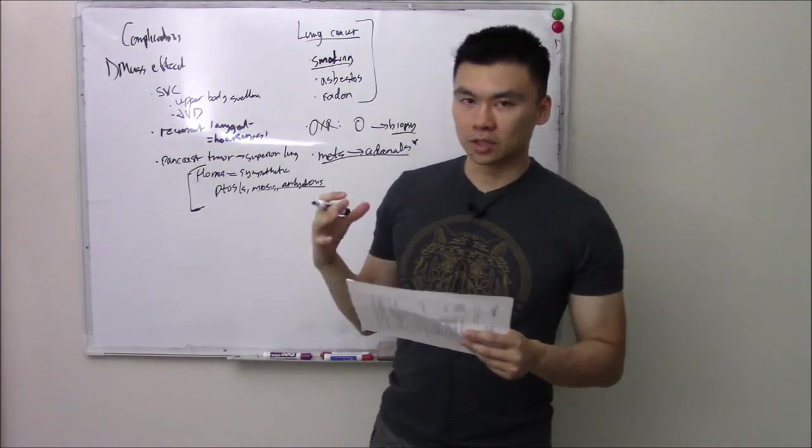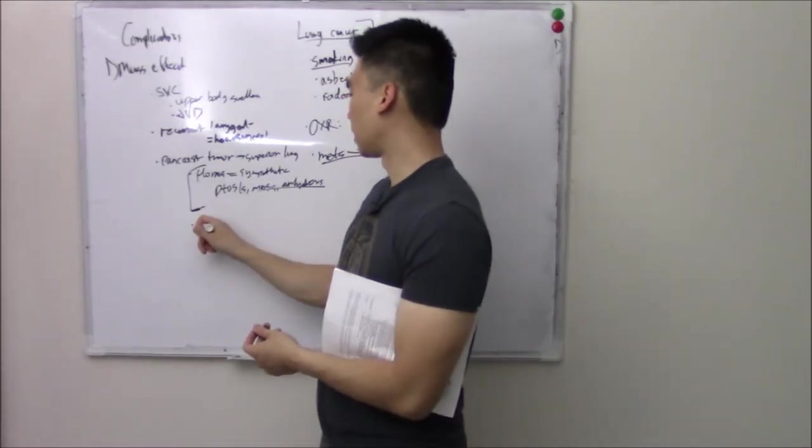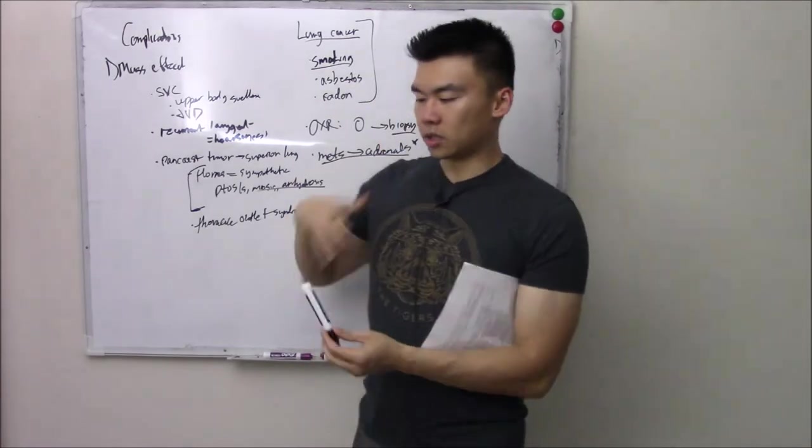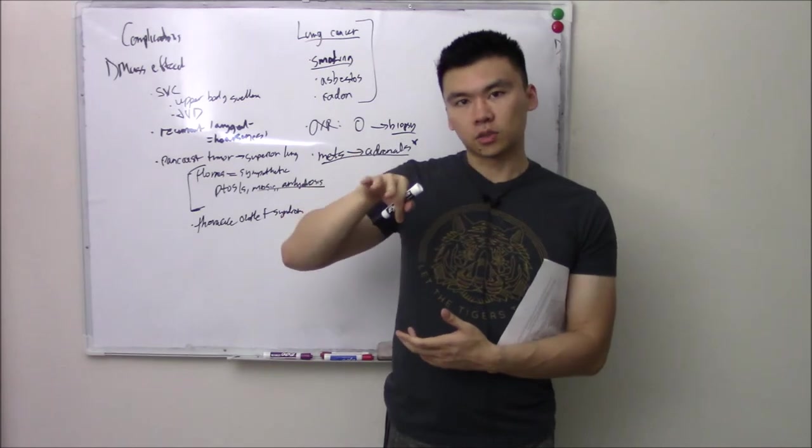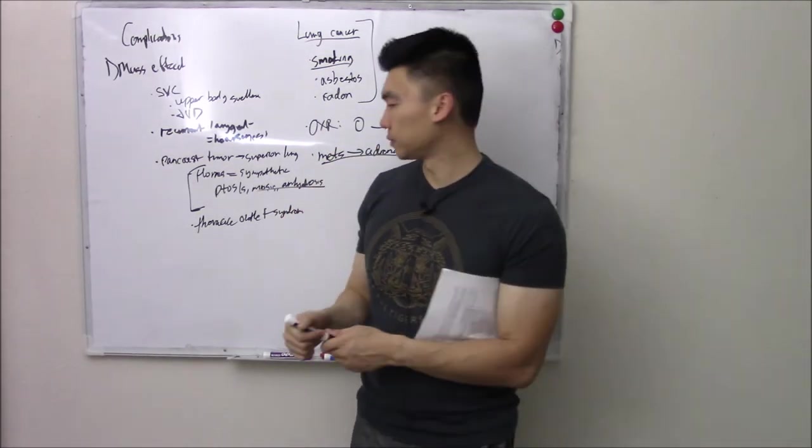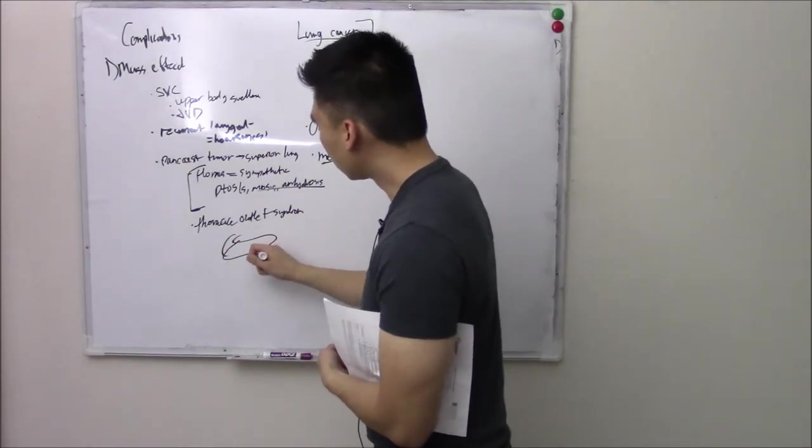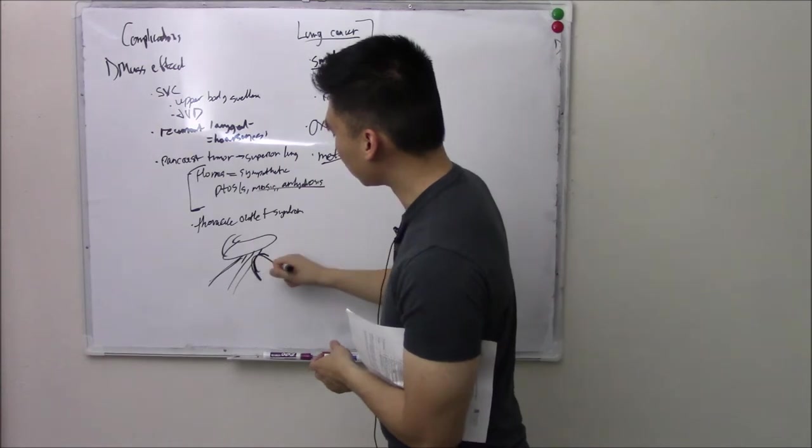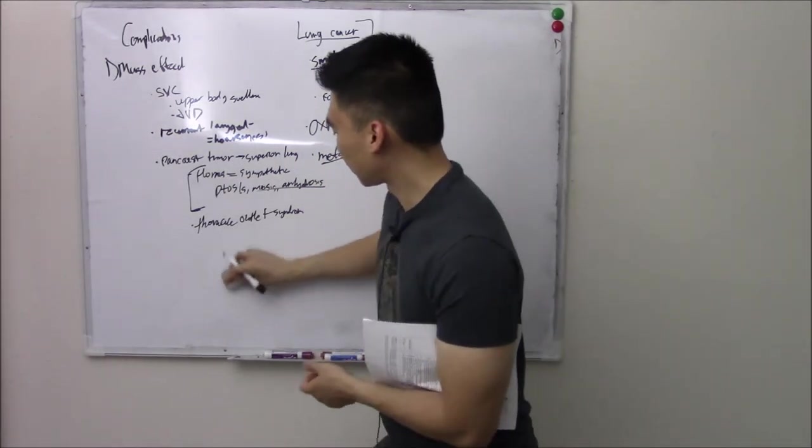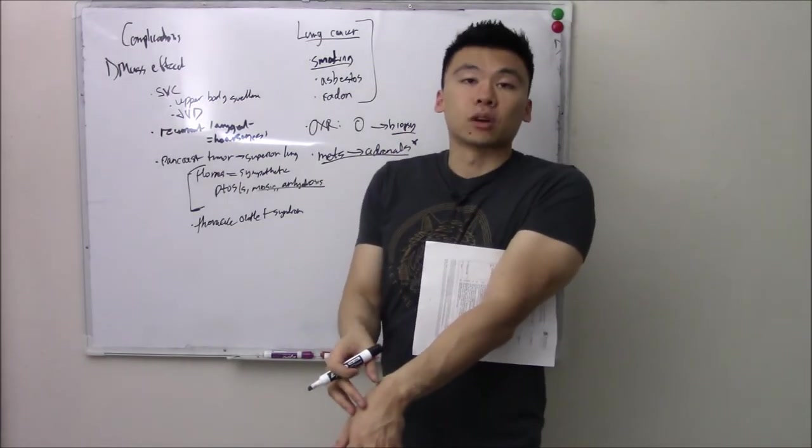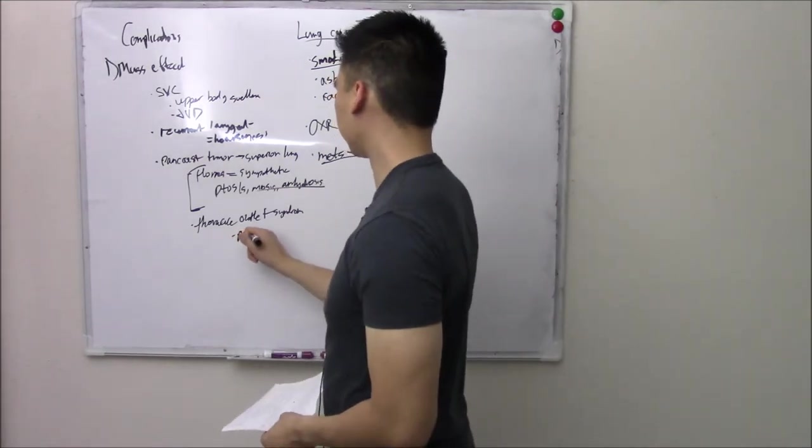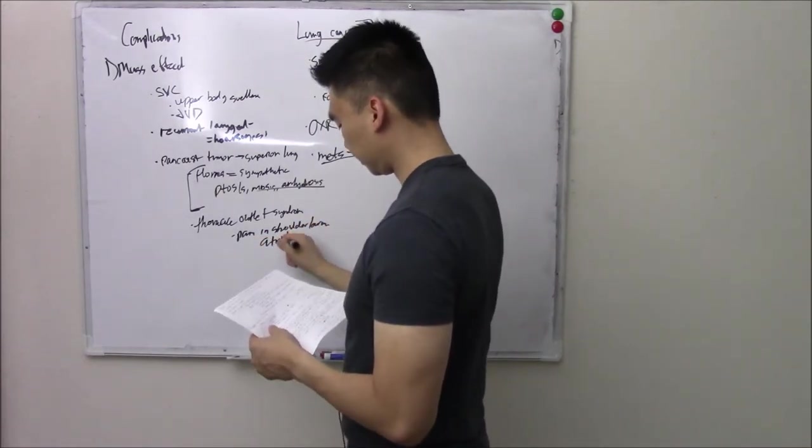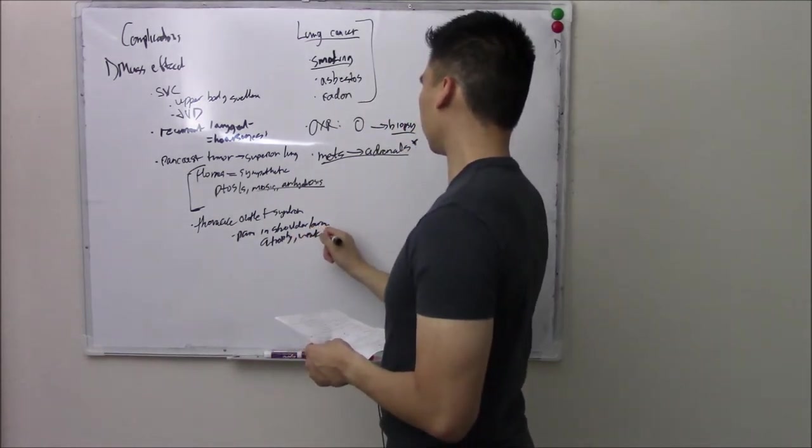One thing that people don't usually think of is thoracic outlet syndrome. Well, here's your lungs. It's encased by your ribs. And under your first rib, your brachial plexus and a bunch of blood vessels go through. And if you have a tumor here, you can compress on your brachial plexus. You can compress on those blood vessels. And so you'll have pain in your arm, in your shoulder. You'll start to atrophy because you're not getting that blood supply. Pain in shoulder, slash arm, atrophy, and weakness. That's thoracic outlet syndrome.